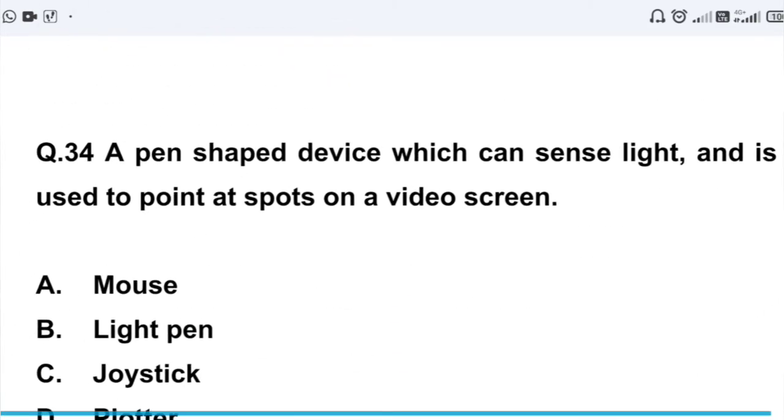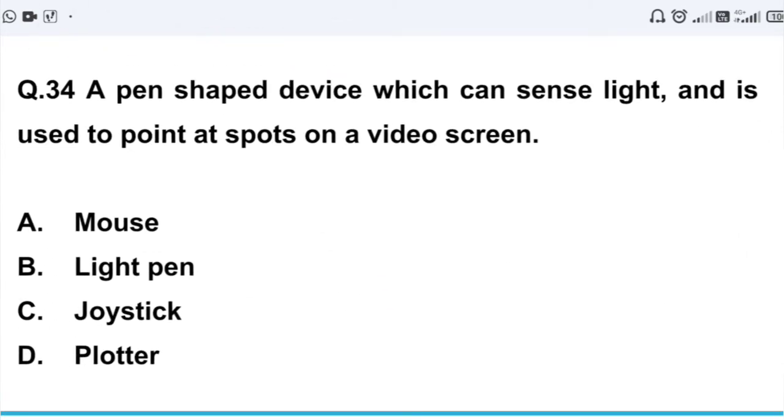Question number 34: A pen shaped device which can sense light and is used to point at spots on a video screen. Option A: mouse. Option B: light pen. Option C: joystick. Option D: plotter. So any device which we can mark on any video screen, we call it light pen. Option B, correct answer.